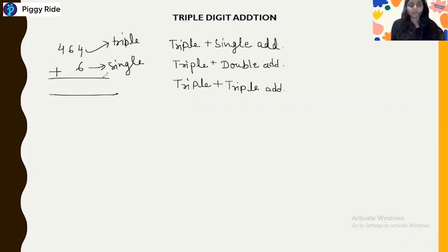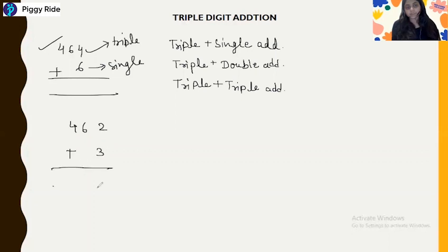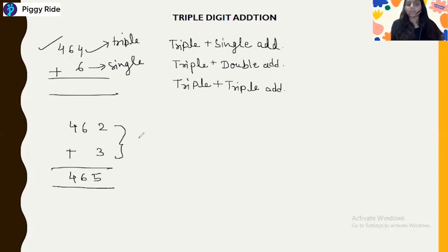So before taking this example, you have to just solve this number. What is the answer? Yes, the answer will be 465. How do you know? Because these are the non-carry numbers — this is a non-carry number addition, these are simple numbers. We have practiced well enough so we can solve it easily.